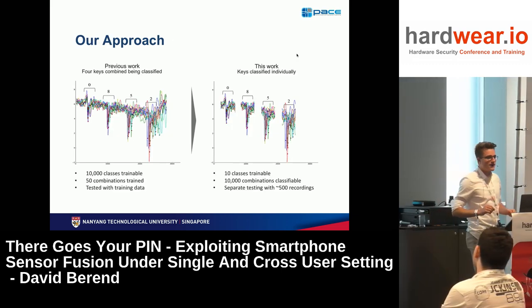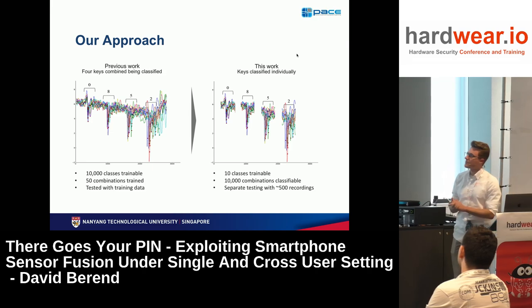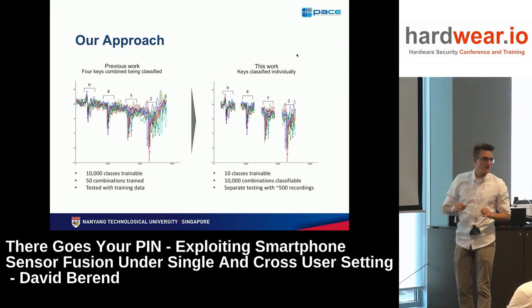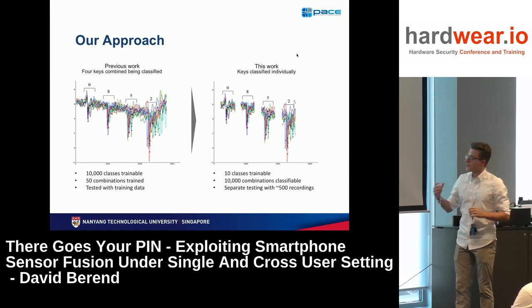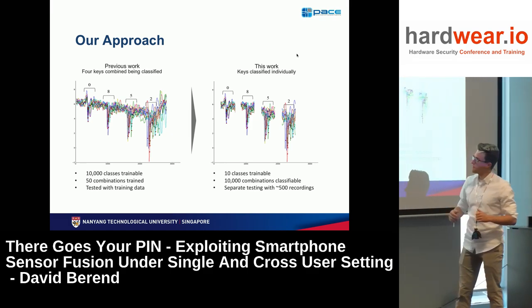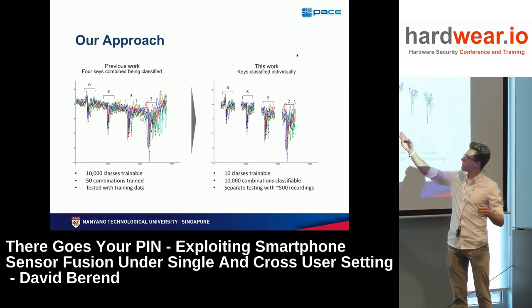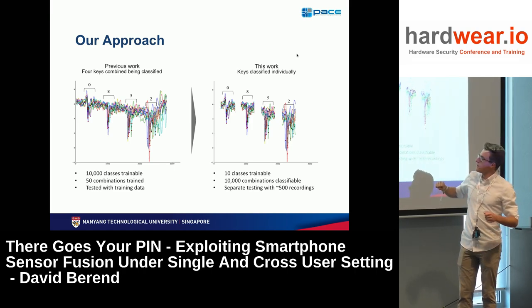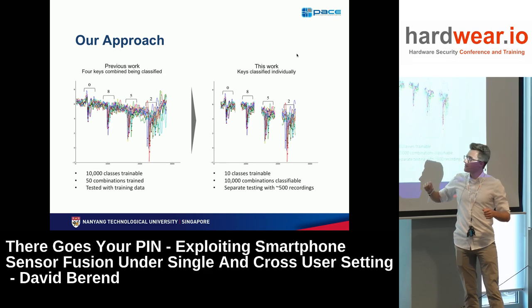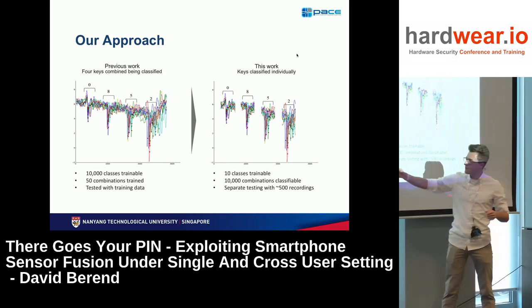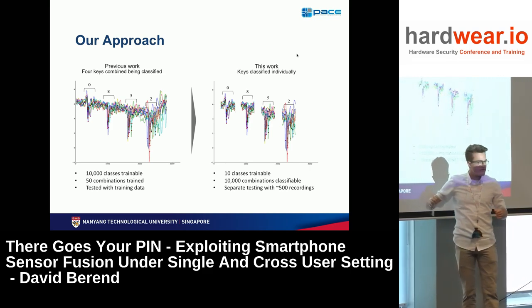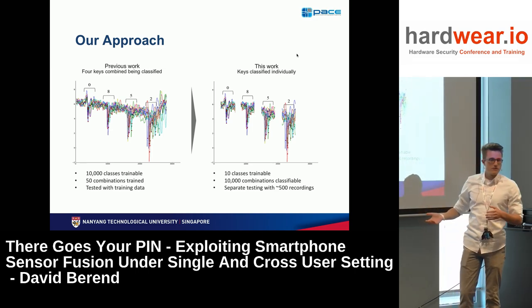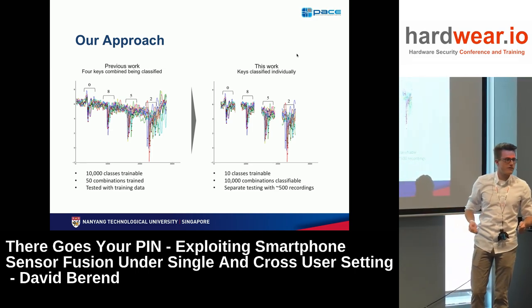What we did differently from all previous papers was that we looked at each digit individually. What others did was take a full password like 0852, record what it looks like when you enter it, do that for maybe 50 combinations entered multiple times, and test on the training data. You can do better.